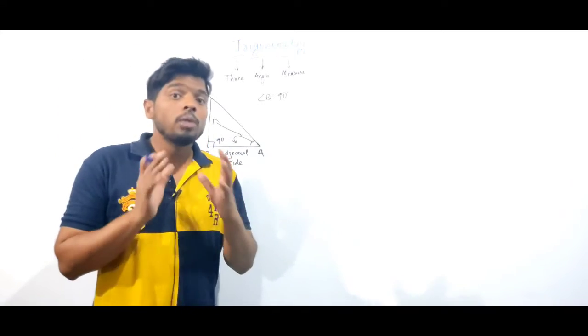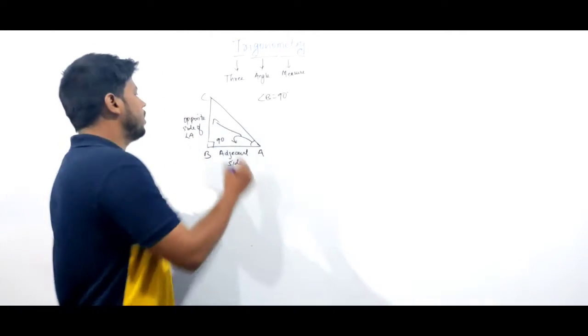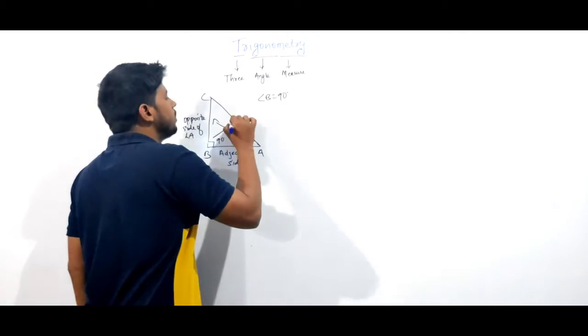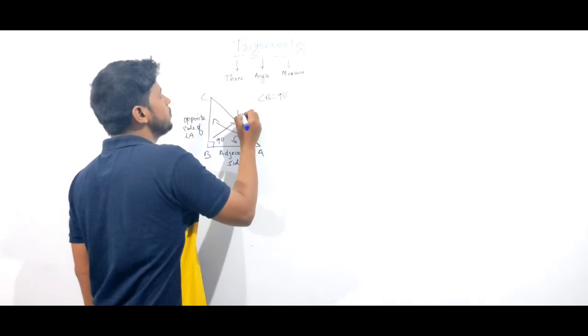And you know about the hypotenuse. What is hypotenuse? The longest side of any right angle triangle is the hypotenuse.